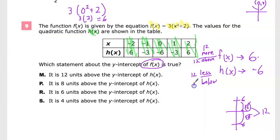So I can say it's 12 more or it's 12 above. This one's 12 less, 12 below. It is 12 units above the y-intercept of h(x). So the answer to number 9 is M.